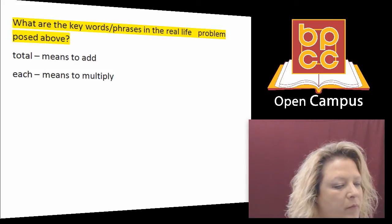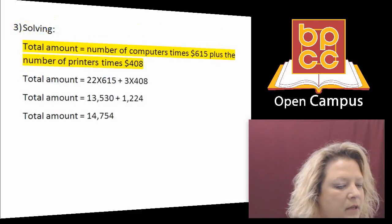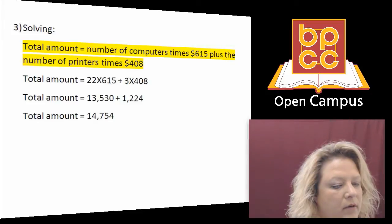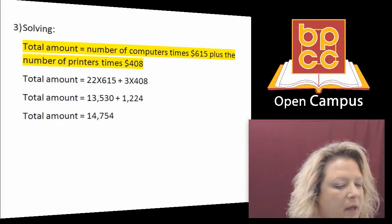Next, remember what the word total means. Total means to add everything together. When it says each, that means to multiply. So if you see this worked out, it says there are the number of computers multiplied by how much they are, the number of printers multiplied by how much they are. And then it adds those two totals together to get $14,754.